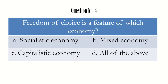Question 4: freedom of choice is a feature of which economy? If we know the features of the three economies — socialist economy, mixed economy, and capitalist economy — this question becomes very easy. We know that socialistic economy is also called planned economy, where everything is controlled by the government, so this would not be the answer.